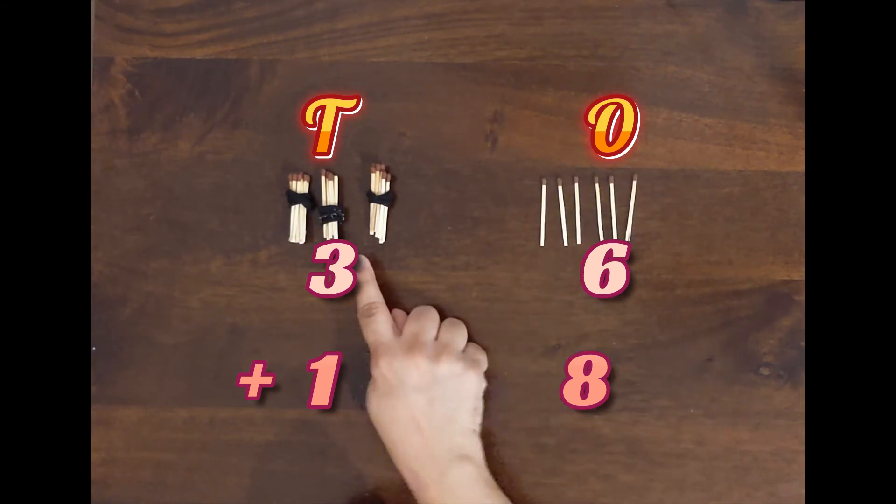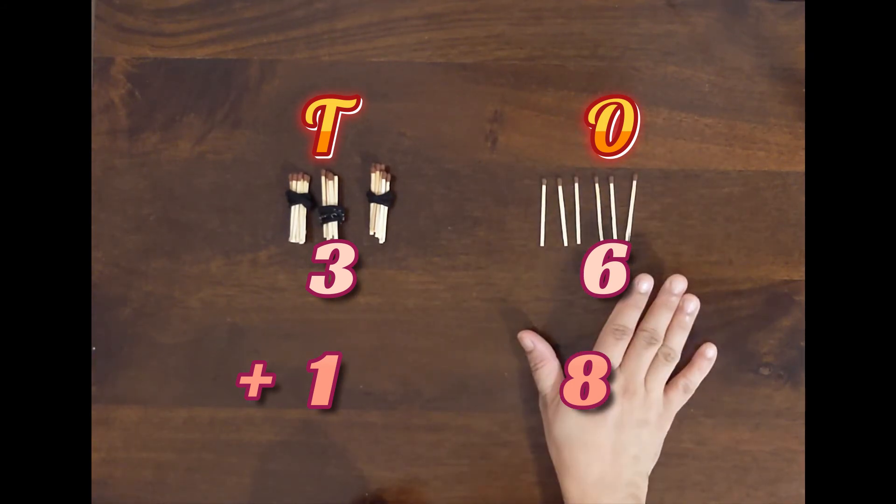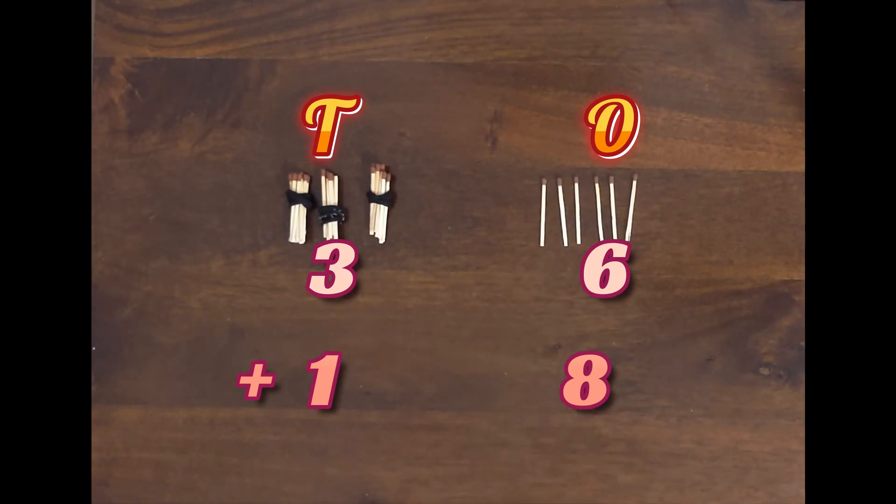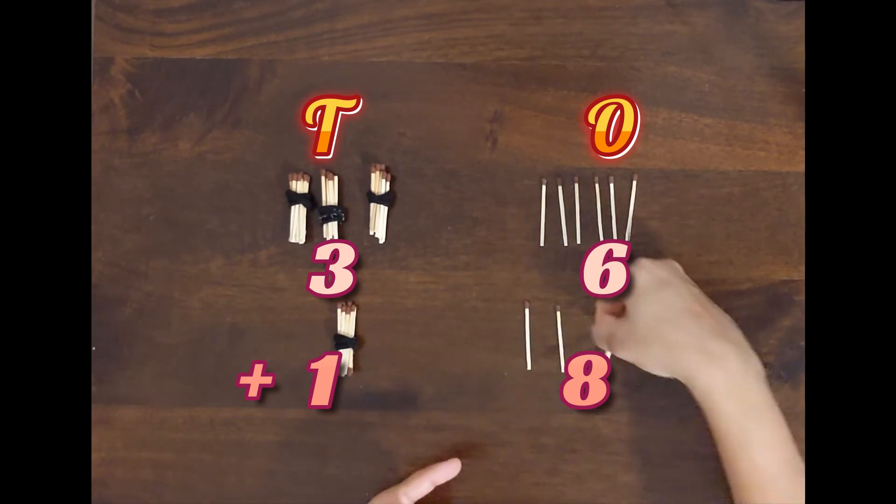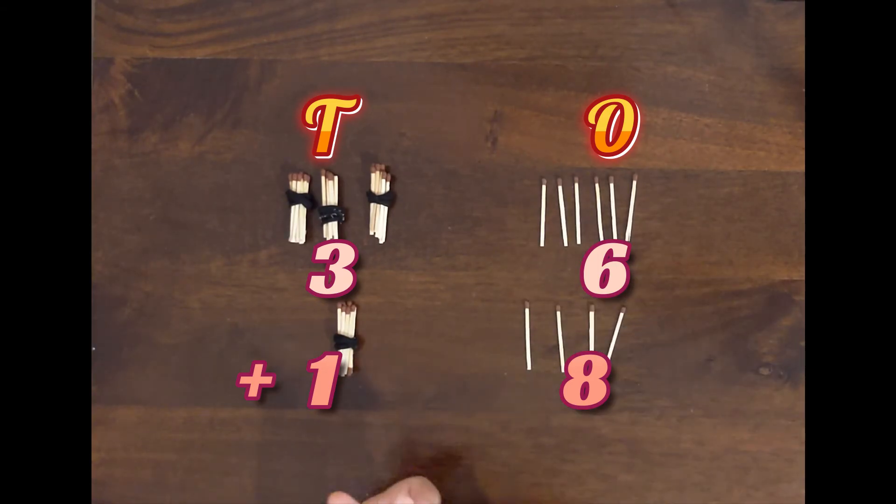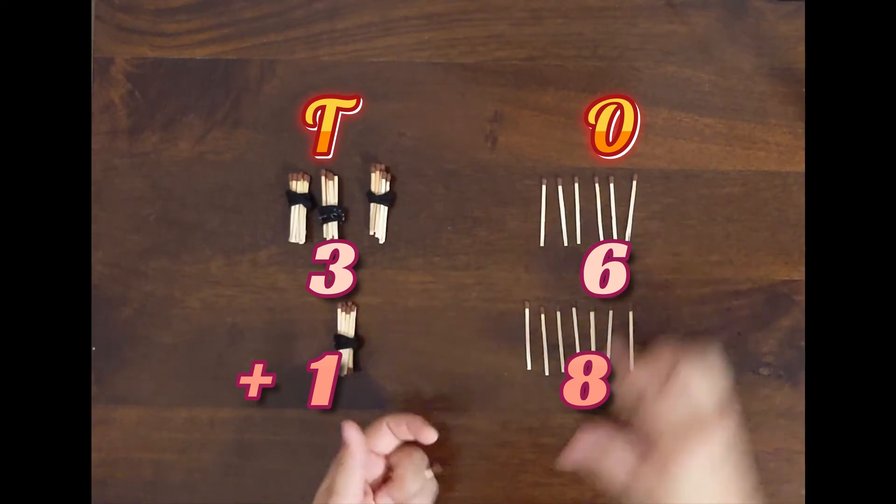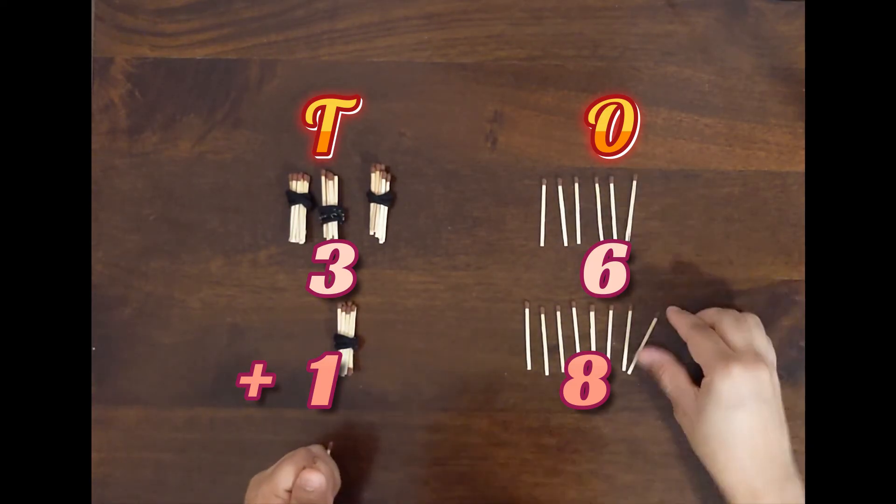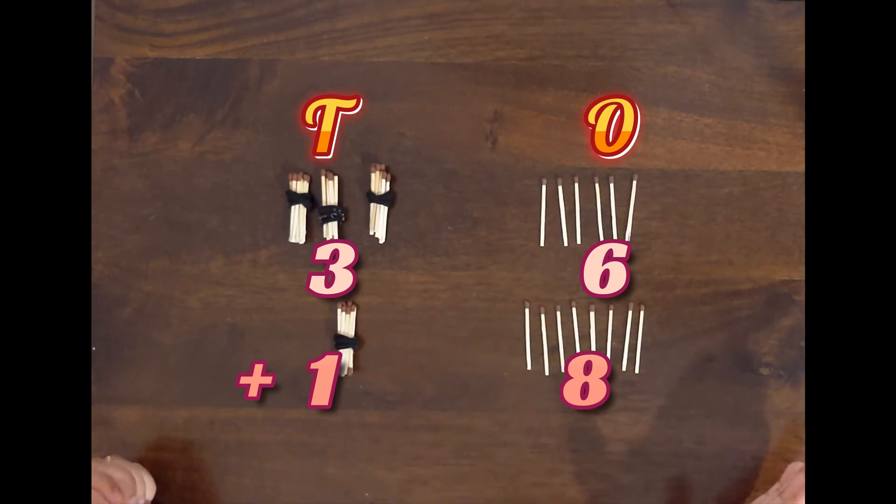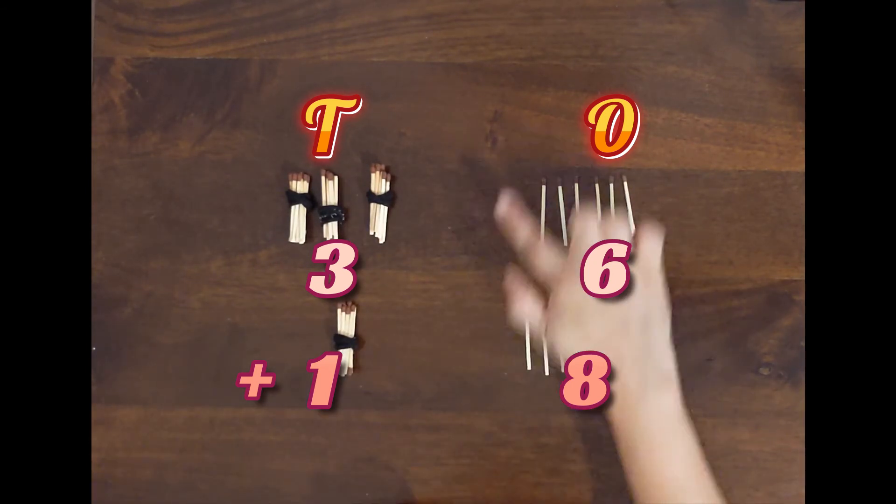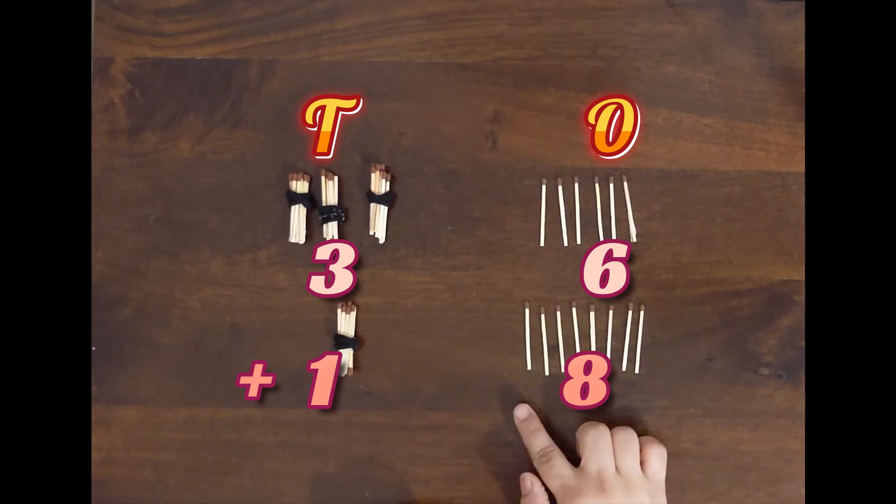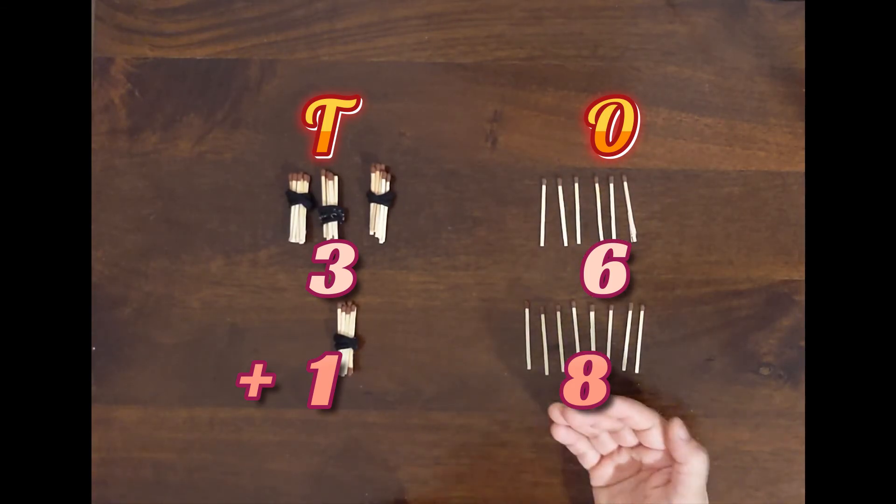So we have represented 36 with the help of math sticks. Now the next number is 18, so we need one bundle for tens place and eight ones. That will represent 18.